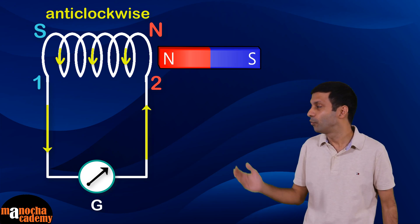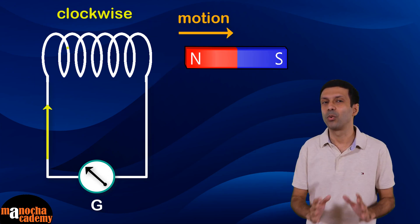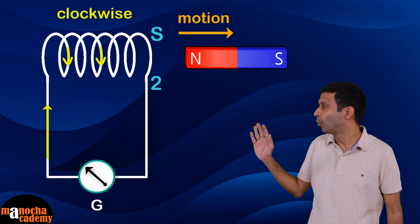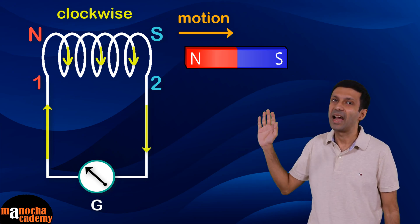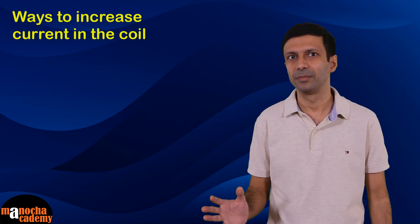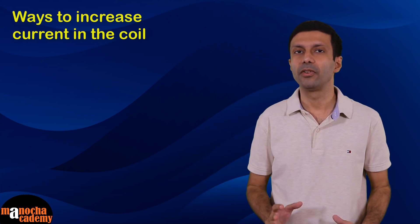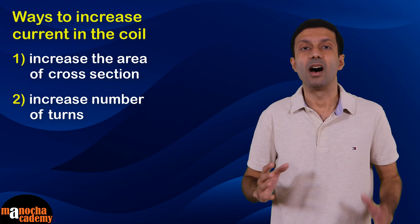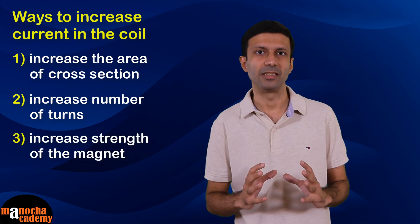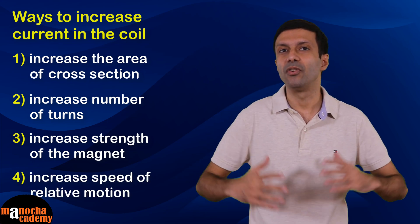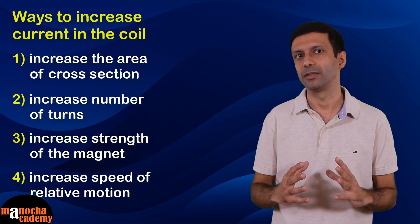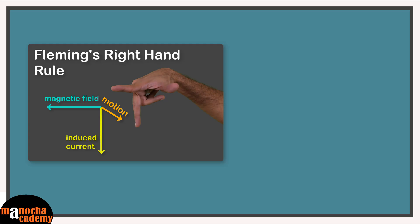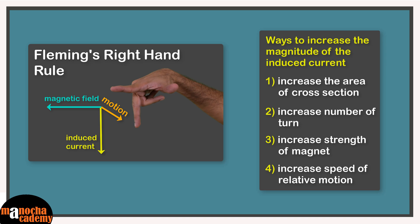Now let's see how the magnitude of the induced current in the coil can be increased. One way is to increase the area of cross-section of the coil and increase the number of turns. Another way is to increase the strength of the magnet. You can also increase the speed of the relative motion between the coil and the magnet — all of these will increase the induced current.